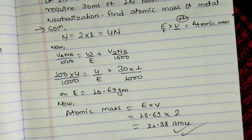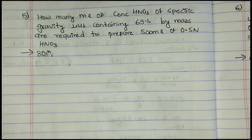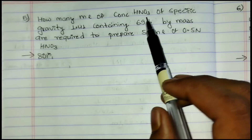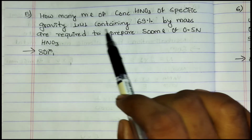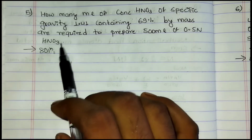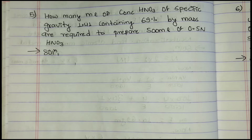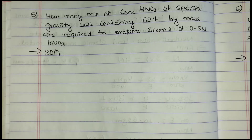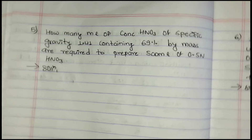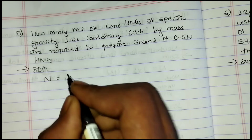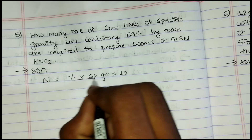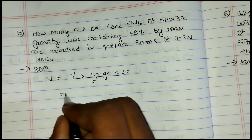Numerical 5: How many ml of concentrated HNO₃ with specific gravity 1.41 and containing 69% by mass are required to prepare 500 ml of 0.5N HNO₃? Equivalent weight of HNO₃ = 63. Use formula: N = (percentage × specific gravity × 10) / equivalent weight.